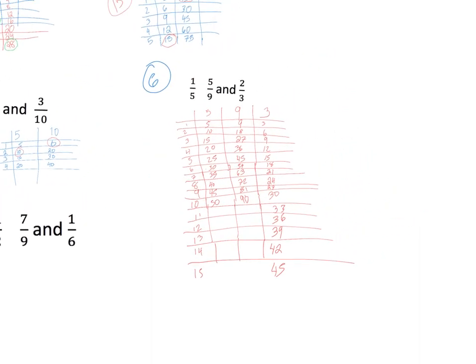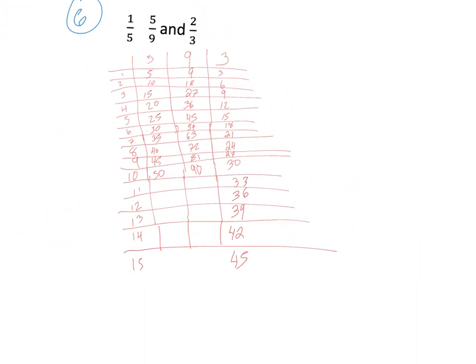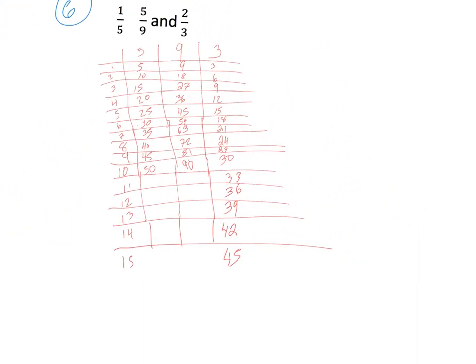We're looking for the smallest number that they all have in common, and it's forty-five. You can see that right there, so forty-five is the answer.